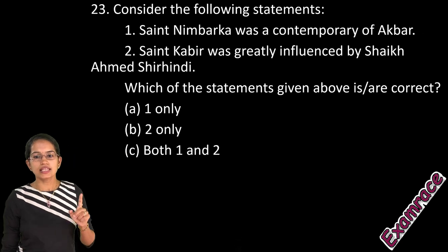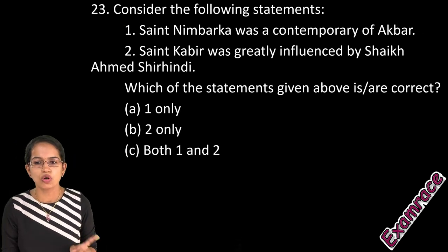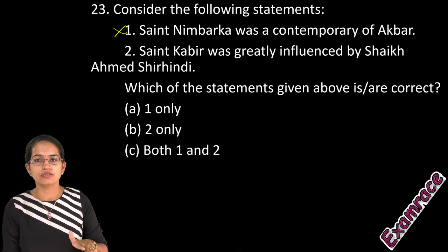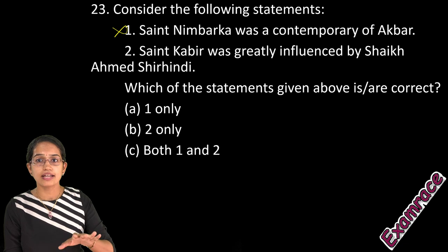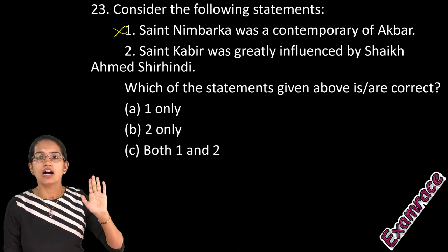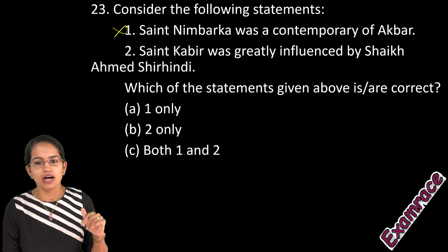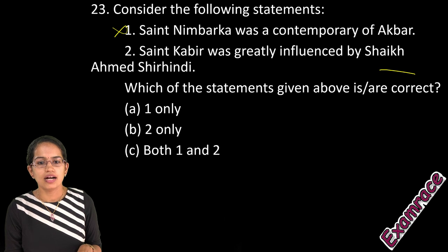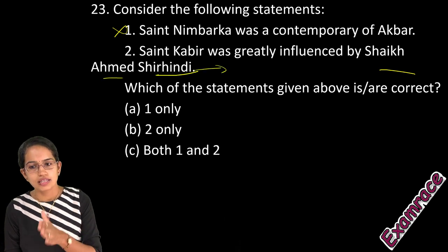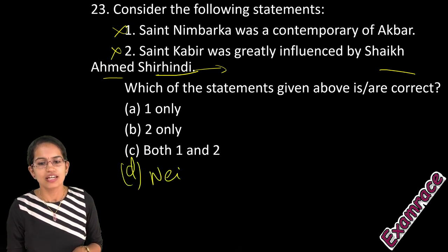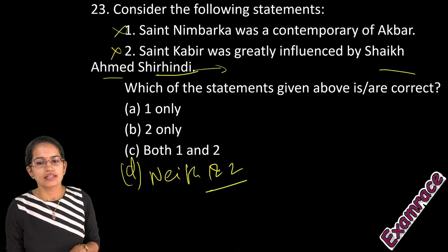Saint Nimbark was not a contemporary of Akbar — that is incorrect. Saint Nimbark was a disciple of Ramanuja and lived during the Bhakti movement, which came much prior to the Sufi movement. Sheikh Ahmad Sirhindi was in the time of Akbar. Kabir was not influenced by it. So neither option 1 nor option 2 are correct.